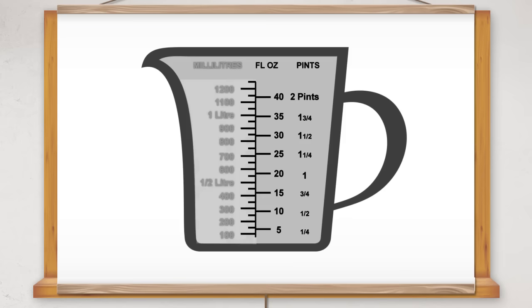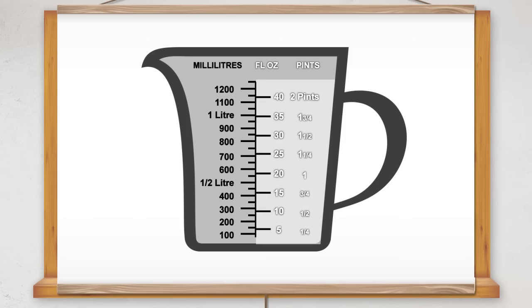Some measuring jugs show both metric and imperial units of measure. This measuring jug shows metric units on this side, millilitres and litres, and imperial units on the other side.